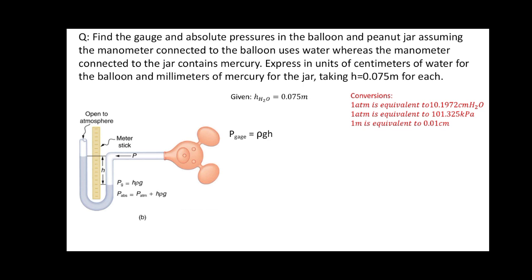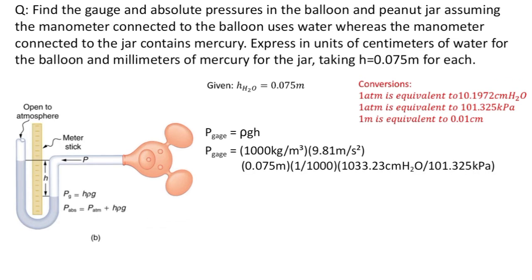With the given h equals 0.075 meters, we solve the gauge pressure using the formula: gauge pressure equals density of water times gravity times height. The density of water is 1,000 kg/m³, multiplied by gravity 9.81 m/s², times height 0.075 m, times 1 over 1,000 to convert to kilopascals. Since kg·m/s²/m³ equals N/m², which equals pascals, dividing by 1,000 gives kilopascals.